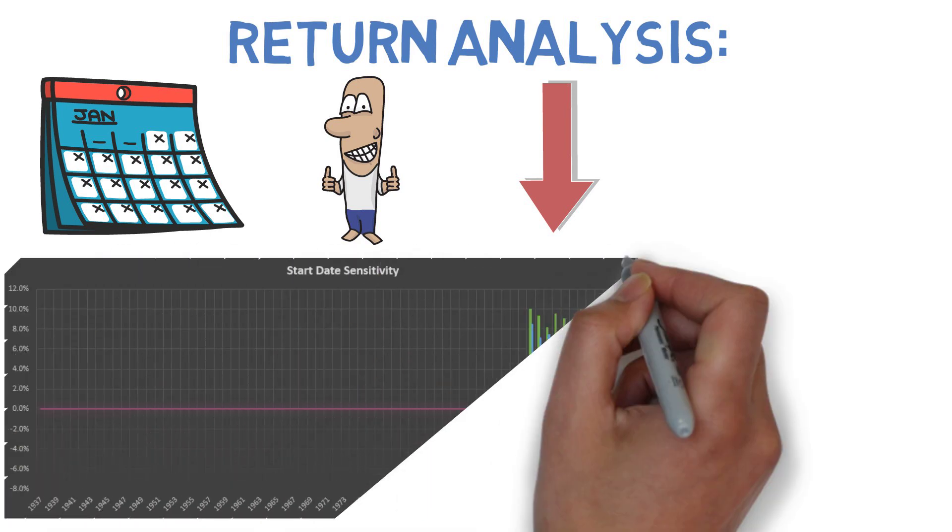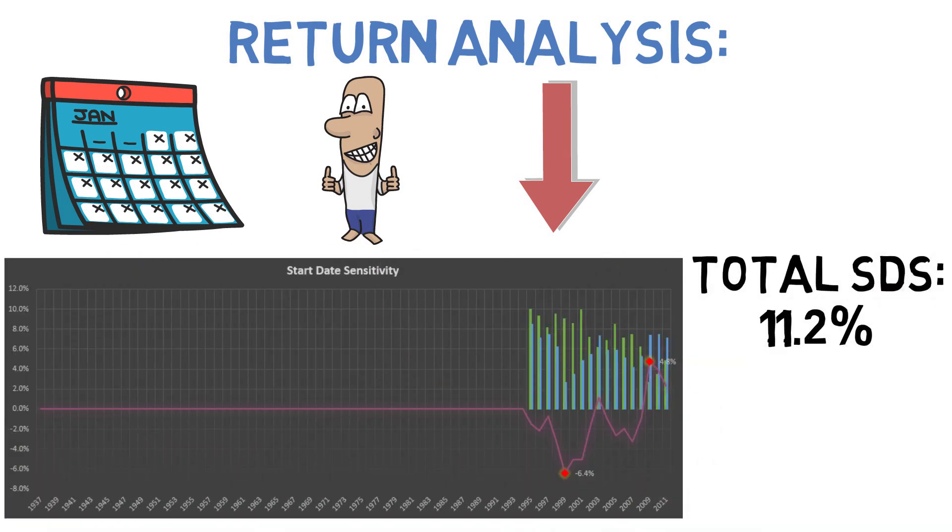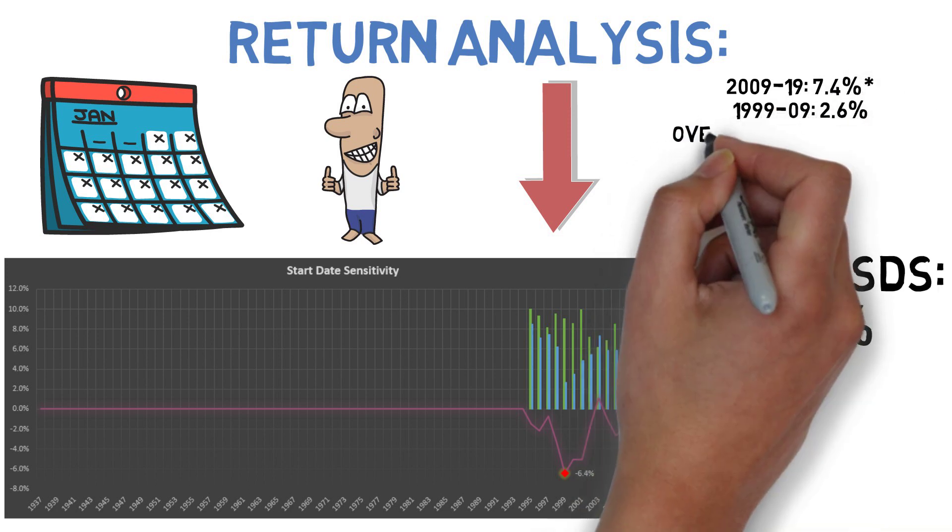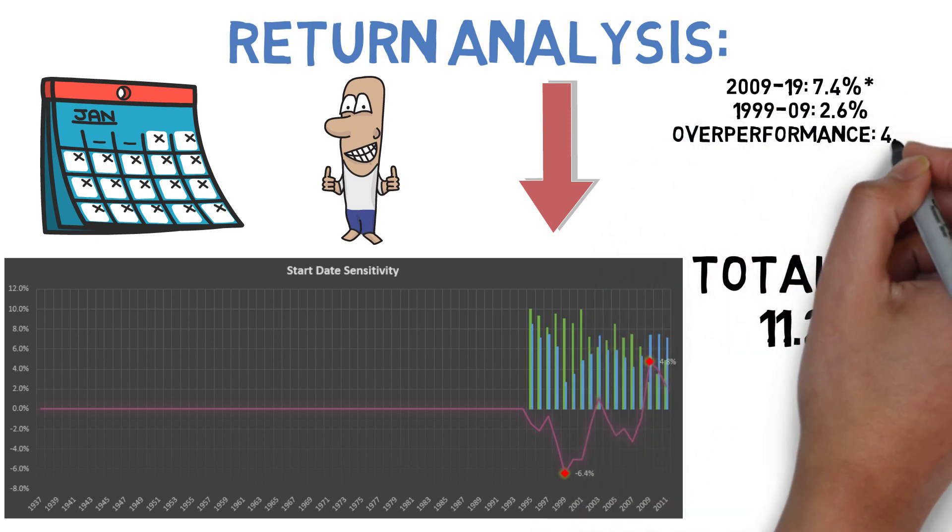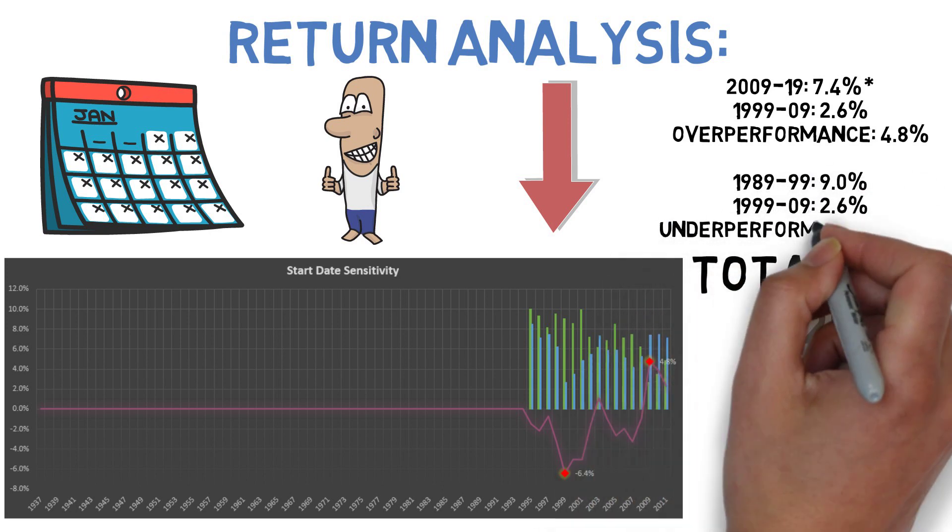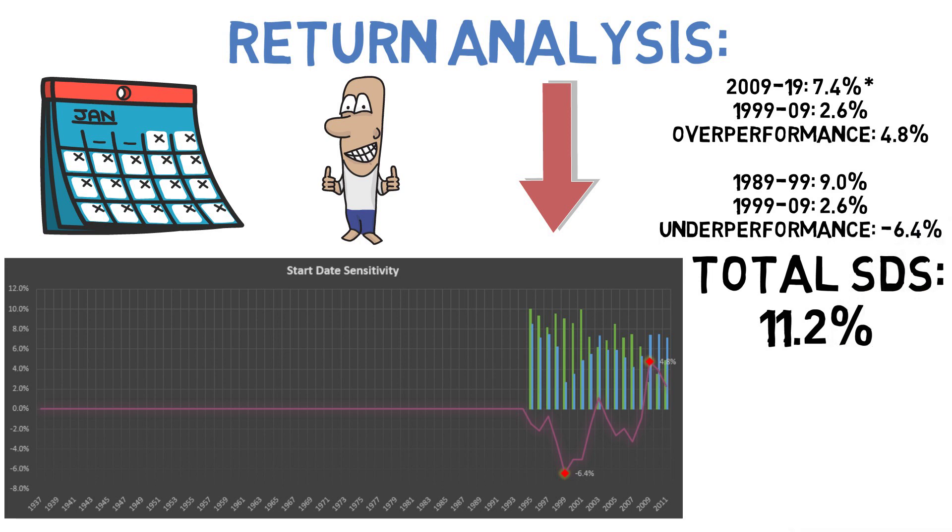The Swenson portfolio had a total start date sensitivity of 11.2% during this time frame. The largest overperformance was 4.8% which took place from 2009 to 2019. In those years the Swenson strategy had inflation-adjusted returns of 6.6% per year, beating out the returns from 1999 to 2009 of 2.5% per year. The largest underperformance was negative 6.4% when the returns from 1999 to 2009 failed to match those that were produced from 1989 to 1999.